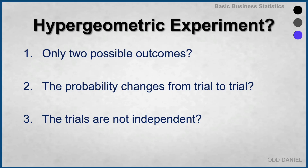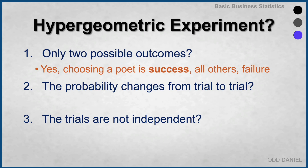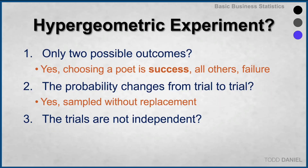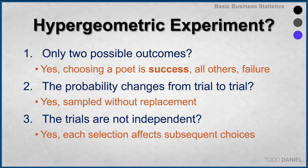That's a lot to keep track of, but let's sort it out. First, let's make sure this is, in fact, a hypergeometric experiment. Number one: are there only two possible outcomes? Yes — choosing a poet is success, and all others in the circle count as failure. Does the probability change from trial to trial? Yes. Dante is randomly selecting three people, so after his first selection there are 11 to choose from, and after his second, there are 10. Each choice affects the probability for the remaining patrons — this is sampling without replacement. Number three: are the trials not independent? Yes, the trials are not independent because each selection affects the subsequent choices.